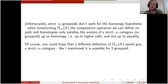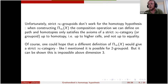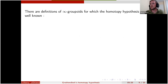In the n=2 case of the homotopy hypothesis I formulated, I used strict two-groupoids. There is a paper from 1991 by Kapranov and Voevodsky that claimed to prove the homotopy hypothesis using strict infinity-groupoids with weak inverses, but it was later shown that their proof was incorrect. It's impossible already for n=3: there is no way to represent all three-types using strict infinity-groupoids.